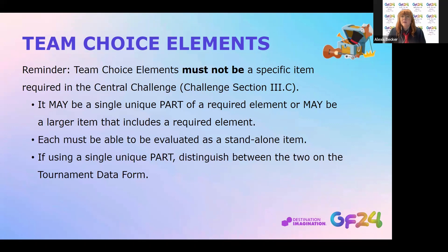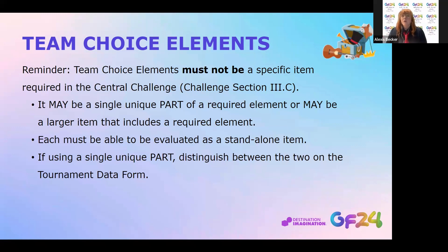There is really one thing that team choice elements cannot be: they cannot be an already required element of the challenge. For example, a team could not choose to have their fantasy map scored as a team choice element because that is already a required element. However, team choice elements may be a single unique part of a required element, or a larger item that includes the required element. Teams could have a backdrop scored even though the fantasy map may be a small part of the backdrop, or teams could choose to have artwork on their fantasy map scored even though it is a small part of the fantasy map, which is a scored element. If there is overlap between a required element and the team choice element, be very specific on your tournament data form to differentiate between the two items, so appraisers know exactly what you want scored for the team choice element.